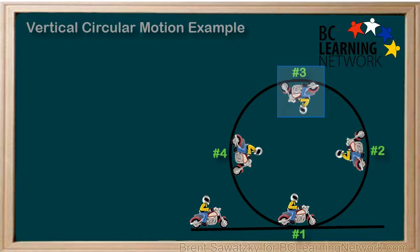Of course, the kinetic energy won't be zero at the top as the rider still needs to be moving, but it is a minimum. Then on the way down at position number four here, some of the potential energy has been converted back to kinetic energy. That is, they're speeding up.